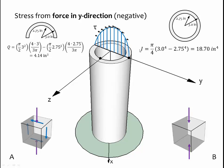The moment of inertia I is the moment of inertia for the whole pipe section. And that can be calculated as shown. And we get 18.70 inches to the fourth power.